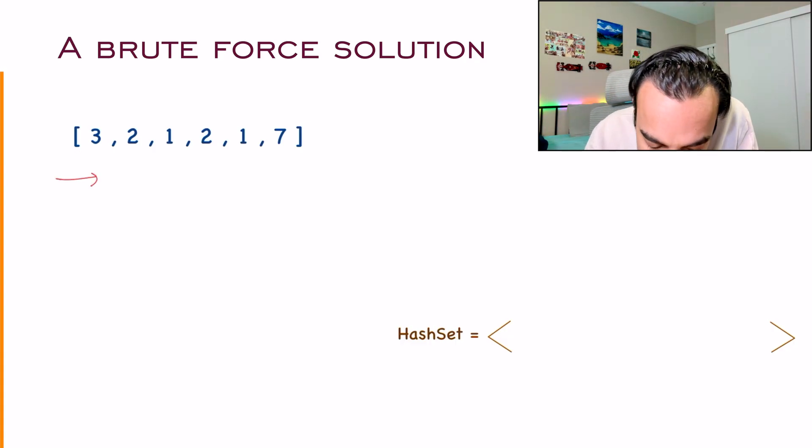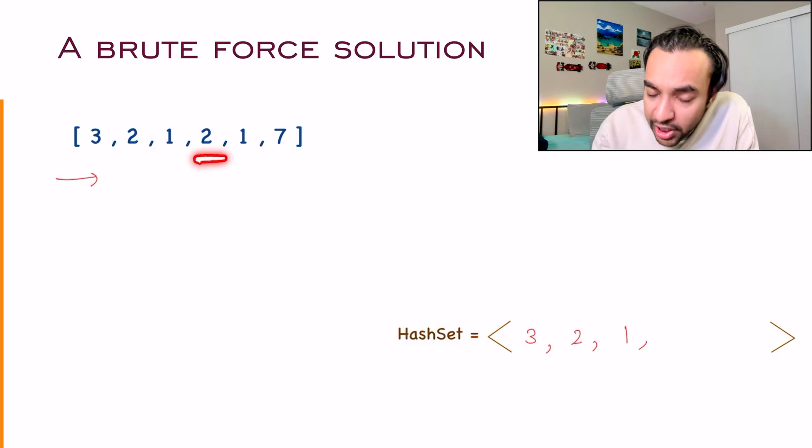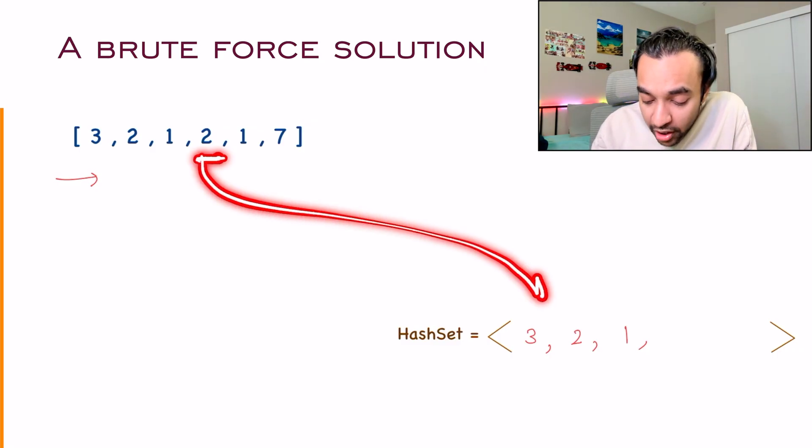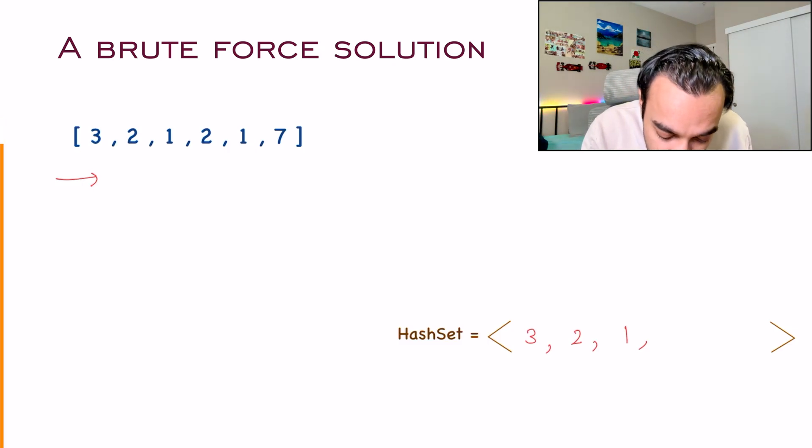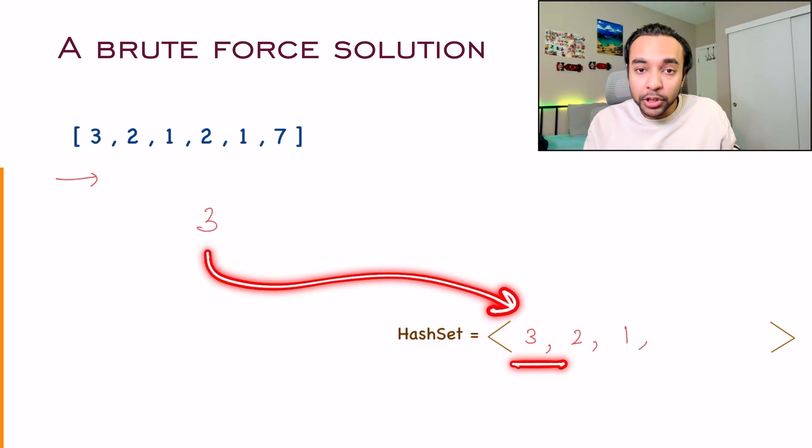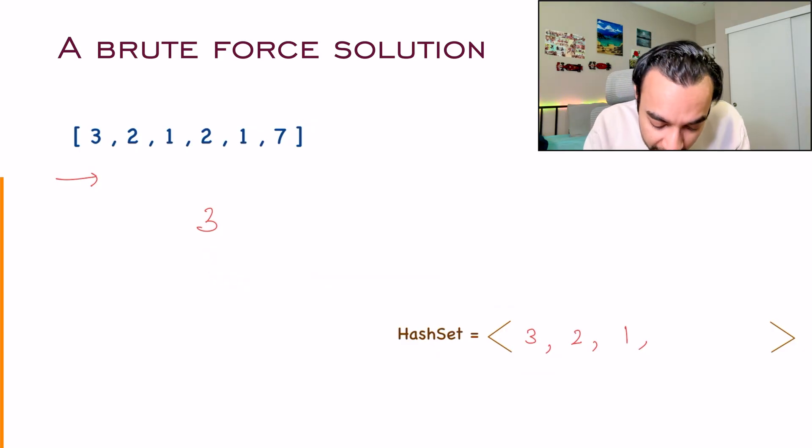You want all your elements to be unique. So anytime you add an element to your set, it should not already be present. Once you start to iterate through this array, you see 3, you can add it. Then you add a 2, then a 1. Then what do you see? You see a 2 again. This 2 already exists in your hash set. So going ahead, you can increment this 2 by 1, it becomes a 3 now. You try to insert it, 3 also exists. So you increment it again and it becomes a 4. You notice 4 doesn't exist in the hash set, so you add a 4.